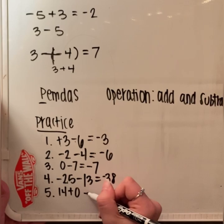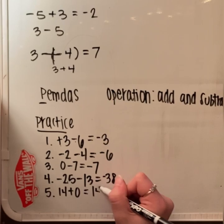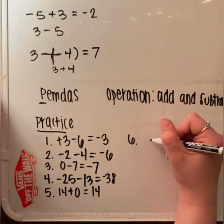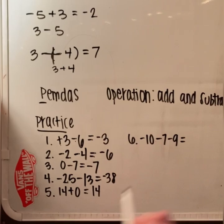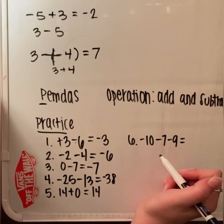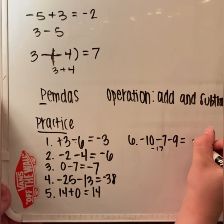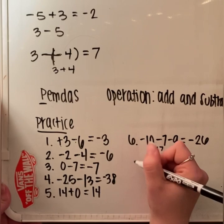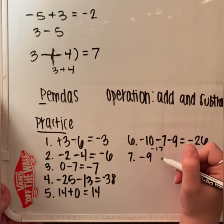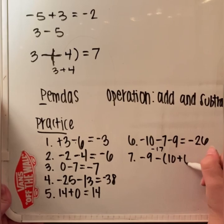Number 5: 14 plus 0. We're adding 0, so we get positive 14. Number 6: negative 10 minus 7 minus 9. There's no need to freak out — just because we have an extra number, we just need to remember PEMDAS and go in order of operations. They all have the same sign, so we combine. Negative 10 plus negative 7 is negative 17, and combining negative 9 gives us a total of negative 26.